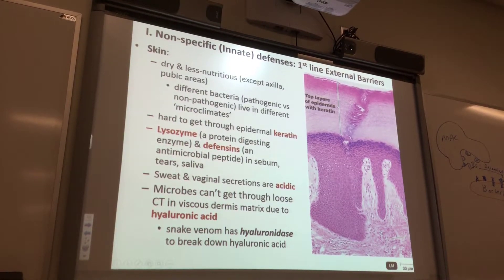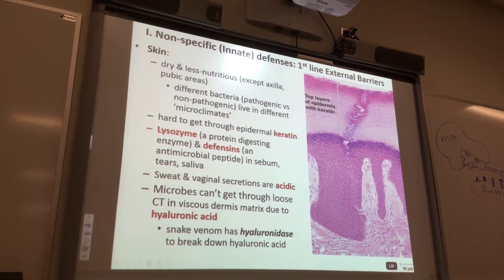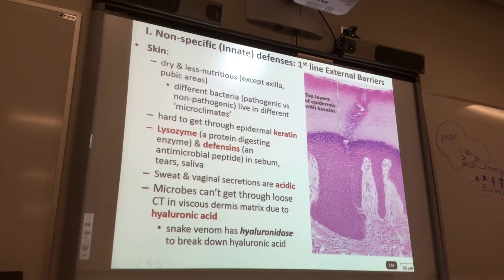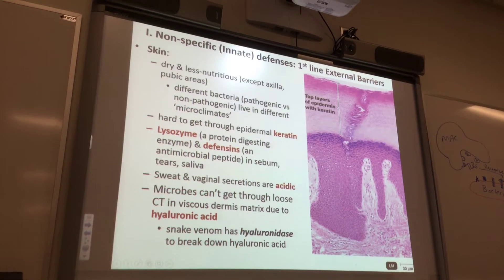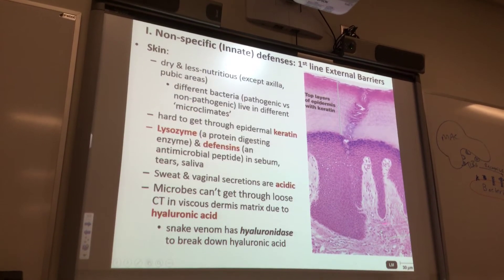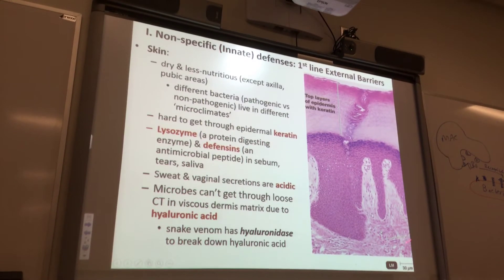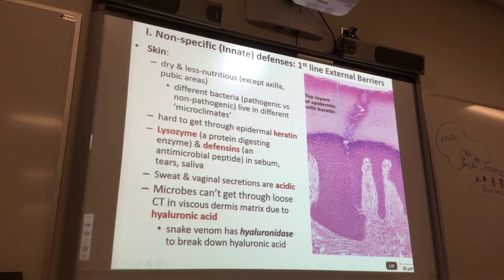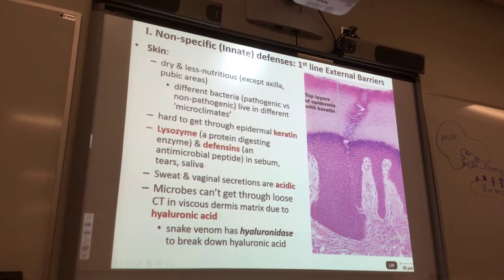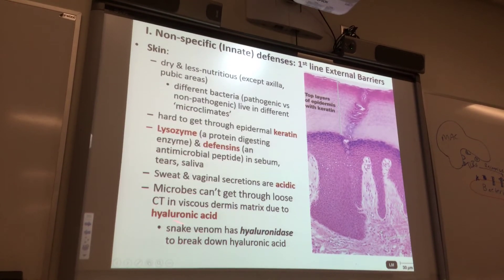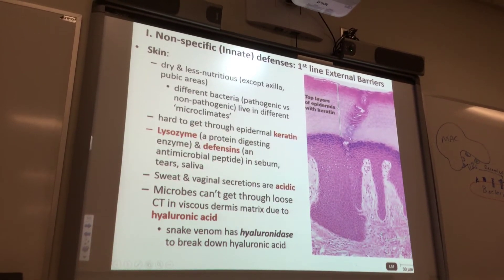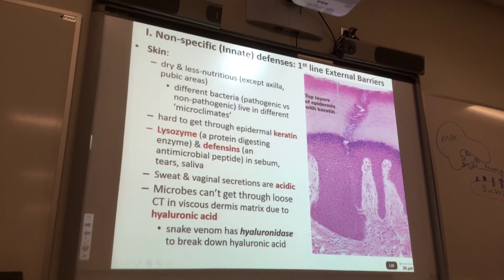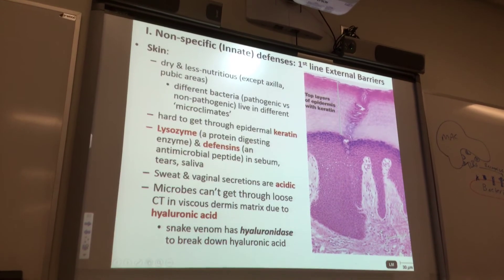This loose connective tissue in the dermis is due to an acid called hyaluronic acid. When you get bitten by a snake, the snake venom breaks down the hyaluronic acid in the dermis, and then the venom can get into the capillaries. Once venom is in capillaries, it can go to all tissues of the body. Interestingly, hyaluronic acid is also an important component in a developing embryonic heart.